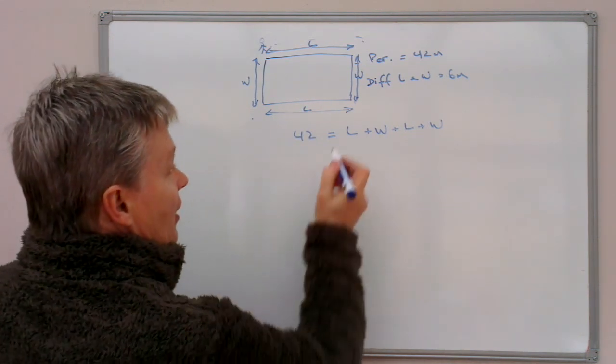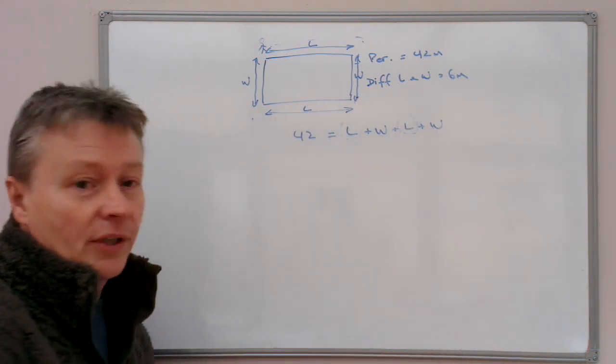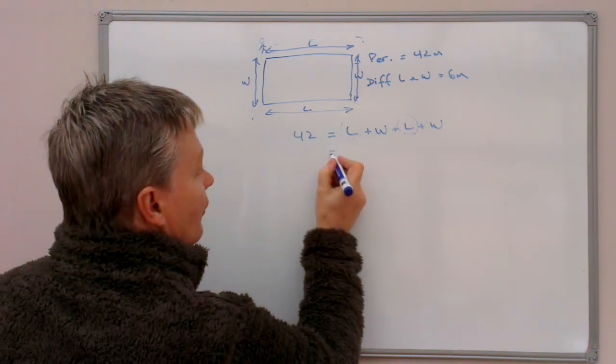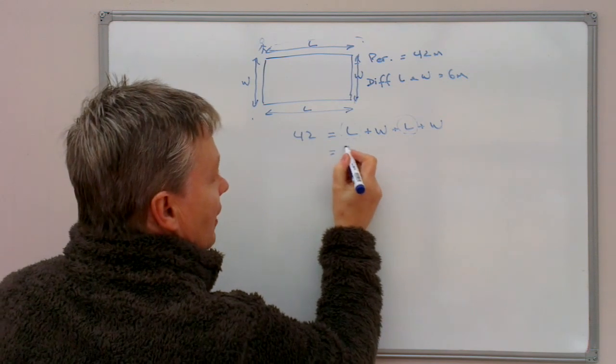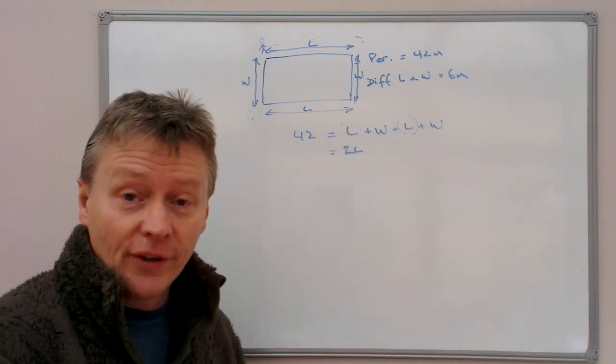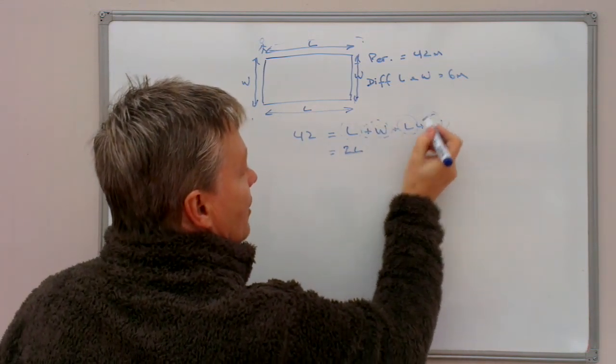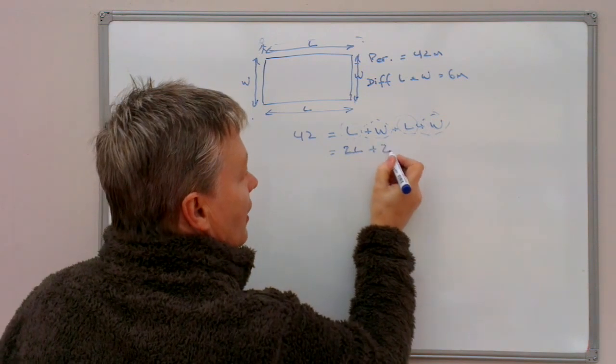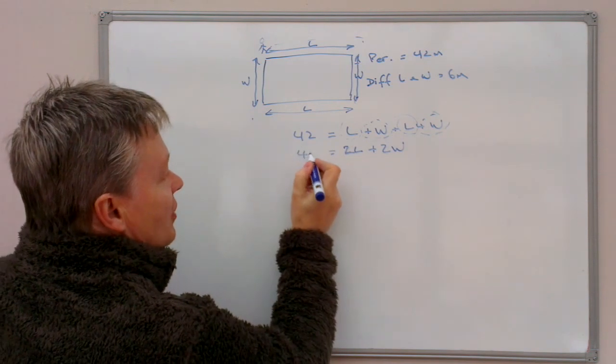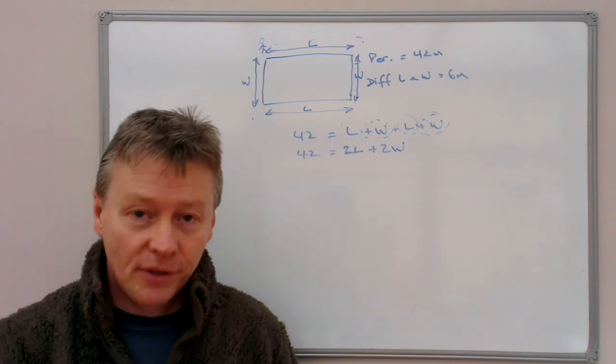The first thing I'm going to do is I'm going to pull together these two values L, which are the two length values. Rather than having L plus L, I'm just going to write it as 2L. Similarly with the W's, I'm going to gather those up. There's a W and there's a W. I'm going to write it as 2W. So now I have my first equation which is 42 equals 2L plus 2W.